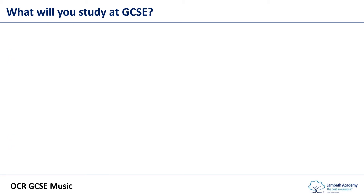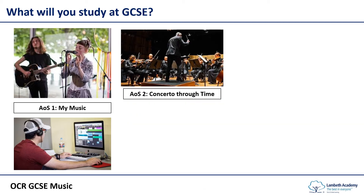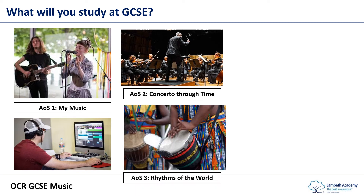So what will you study at GCSE Music? GCSE Music is divided into those three key areas. Area of Study 1 — My Music — is where you will perform as a soloist and as a group and compose two pieces of music. In terms of listening and appraising, you study four topics of different musical history and music from around the world. You will study the Concerto Through Time — covering Renaissance, Baroque, Classical and Romantic music. You'll study Rhythms of the World, looking at West African drumming, Samba, Calypso, Palestinian music, Greek music, Israeli music, and Indian music and Bhangra.